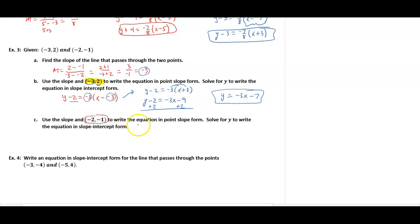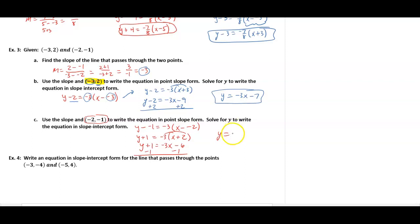Using the other ordered pair (-2, -1) to verify: y minus (-1) equals -3 times (x minus (-2)), which becomes y plus 1 equals -3 times (x plus 2). Distribute: y plus 1 equals -3x minus 6. Subtract 1: y equals -3x minus 7. No matter which point you use, you get the same slope-intercept form.